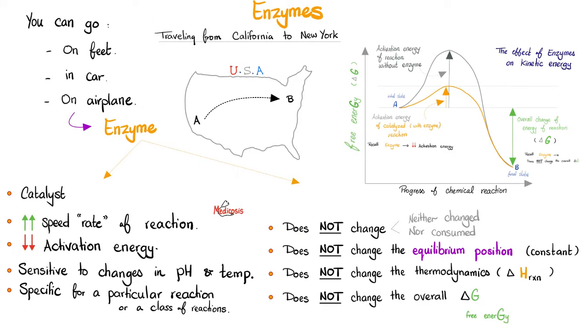Enzymes are what? Proteins. And they are what? Catalysts. They speed the rate of the reaction. They increase the V, but they lower the activation energy. However, the overall change of energy reaction, delta G, remains the same.